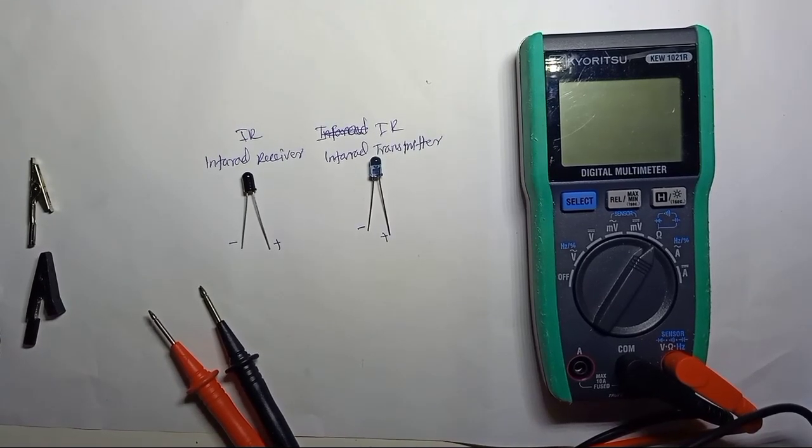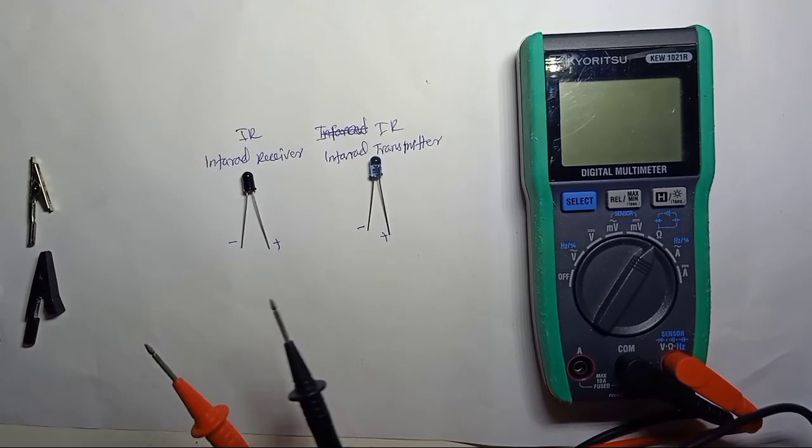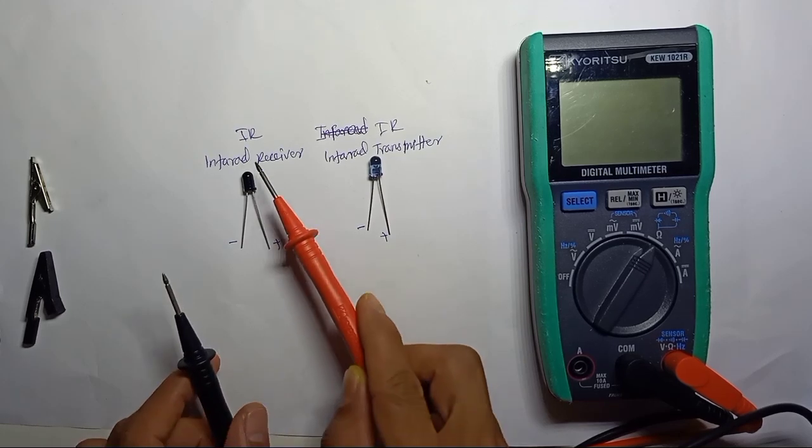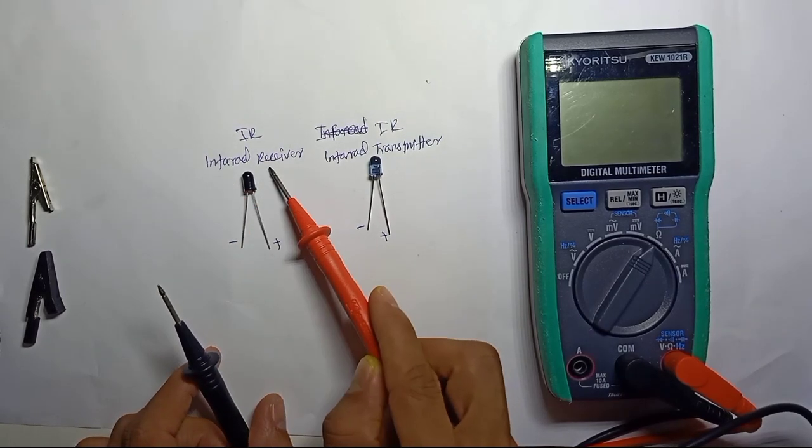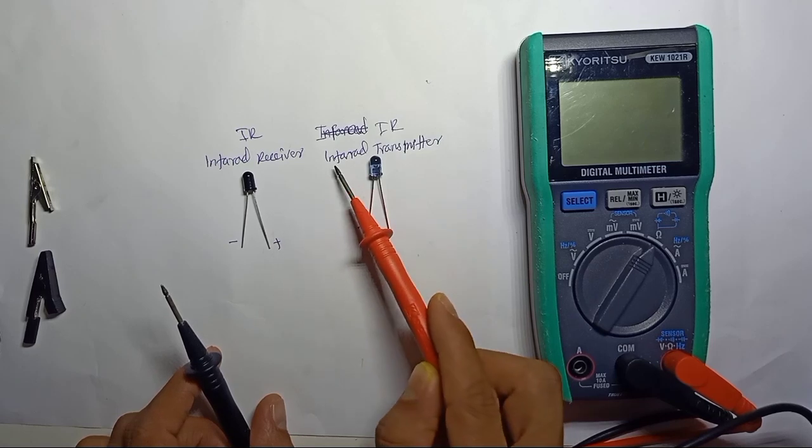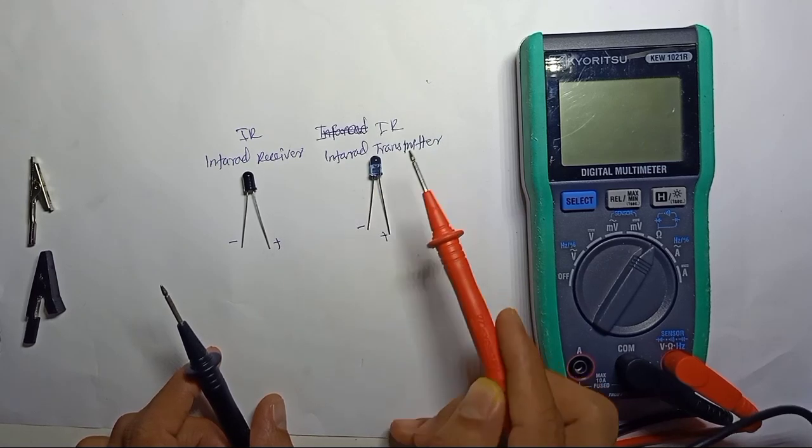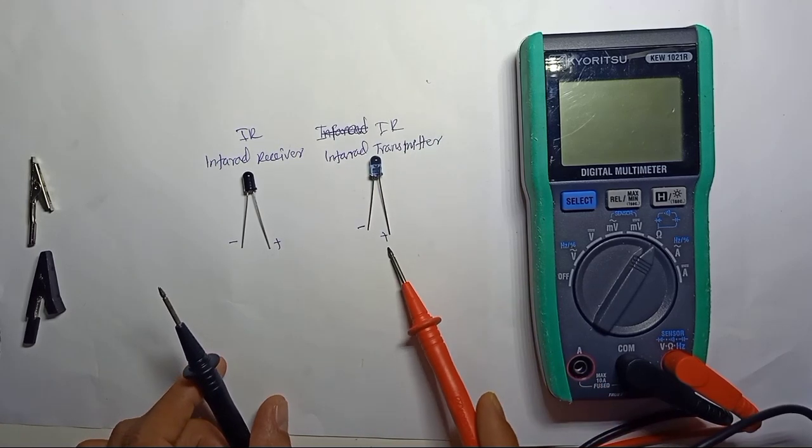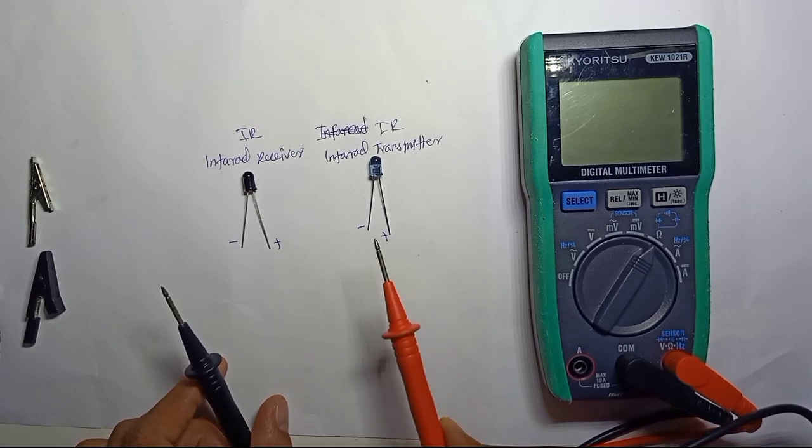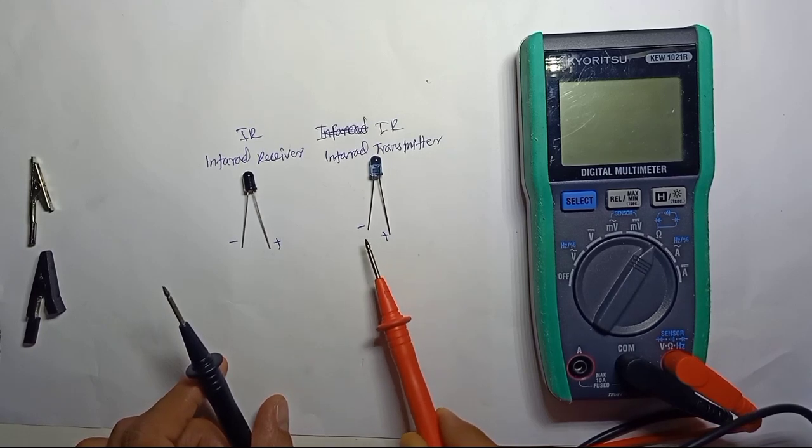How we can check IR receiver and transmitter with a multimeter. I have one infrared receiver here and another one is an infrared transmitter. This looks like an LED, but it's not an LED - this is an infrared transmitter.